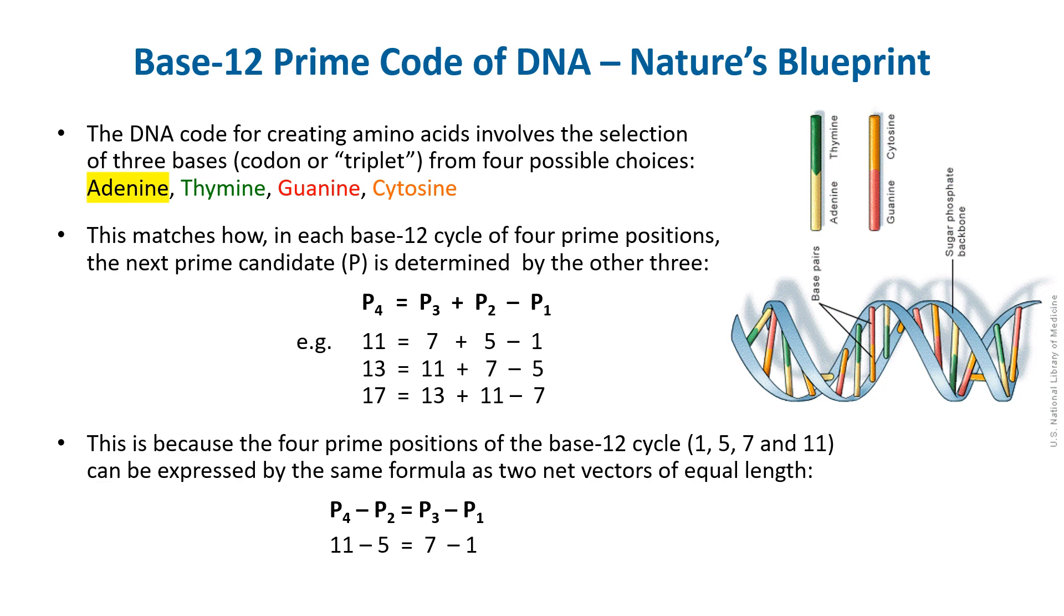In each strand of DNA, amino acids are created in combinations of three bases, called a codon or triplet, from four possible choices: adenine, thymine, guanine, and cytosine, or A, T, G, and C for short. It's strings of these base triplets that form the sequence of the genetic code running the length of the DNA molecule.